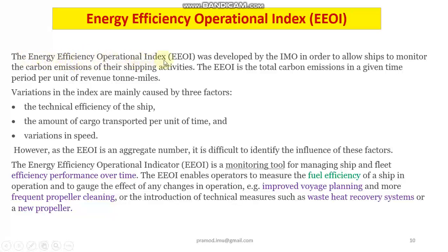The Energy Efficiency Operational Index was developed by IMO in order to allow ships to monitor the carbon emissions from shipping activities. The EEOI is the total carbon emissions in a given time period per unit of revenue and miles. Variations in this index are mainly caused by three factors: one is the technical efficiency of the ship, second is the amount of cargo transported per unit time, and third is variations in speed.